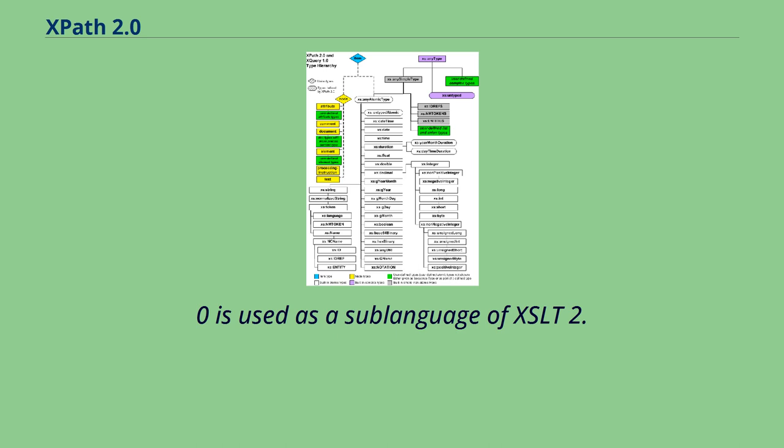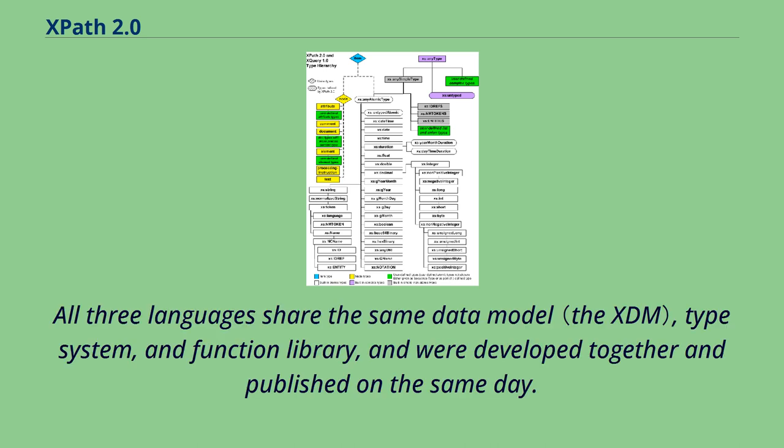XPath 2.0 is used as a sub-language of XSLT 2.0, and it is also a subset of XQuery 1.0. All three languages share the same data model, type system, and function library, and were developed together and published on the same day.